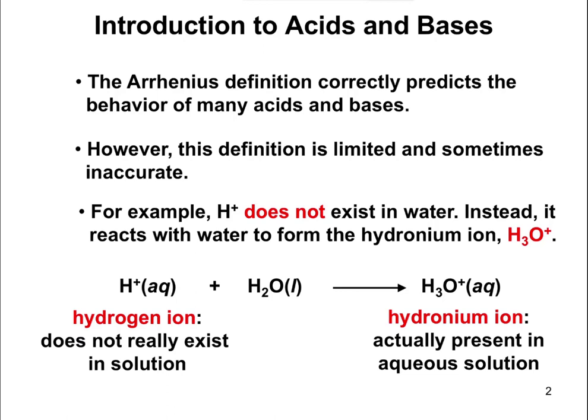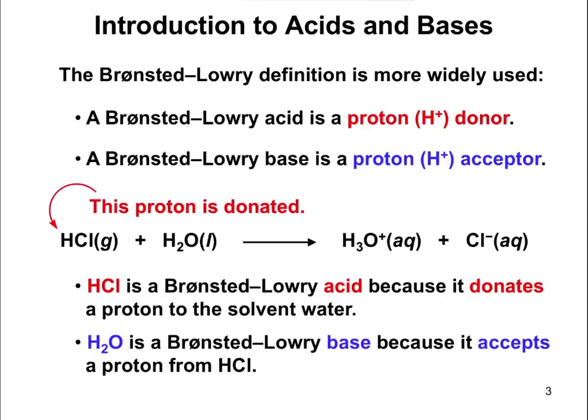Because of this and other reasons, the definitions for acids and bases we're actually going to use is the Bronsted-Lowry definition. An acid is what we refer to as a proton donor or an H+ donor, and a base is going to be a proton or H+ acceptor.